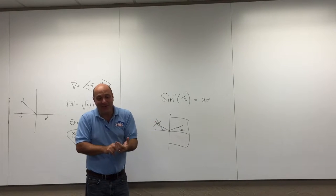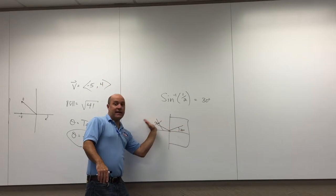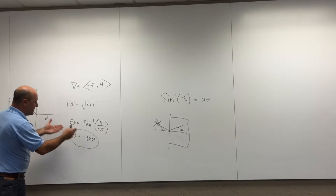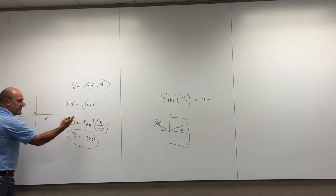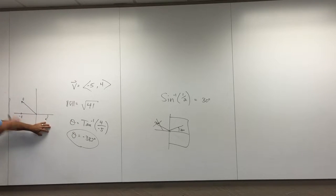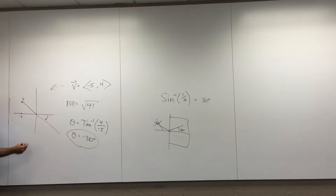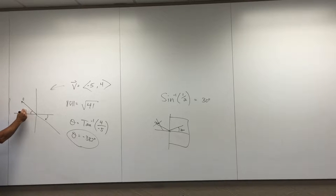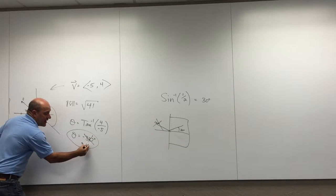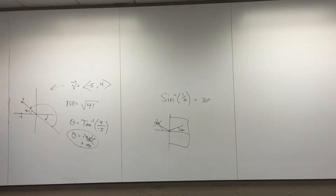Because the input is negative, the calculator chose an angle in quadrant four based on the restricted range of tangent inverse — quadrants one and four. But based on the picture of the vector, we know it's in quadrant two. So negative 38.7 degrees is not the right answer. The related angle of 38.7 degrees is correct, but it belongs in quadrant two, so we add 180 degrees: the answer is 141.3 degrees.